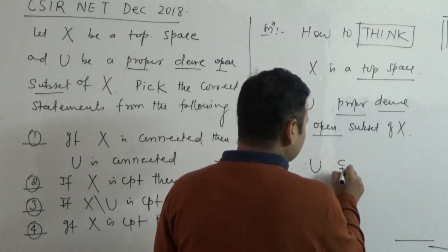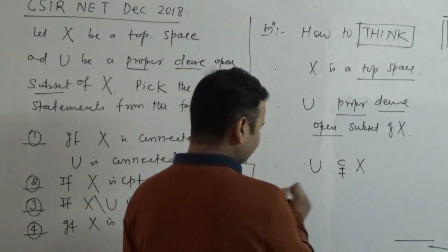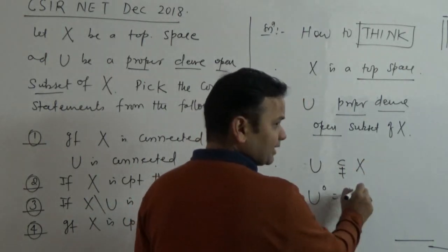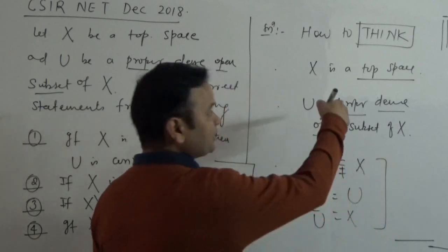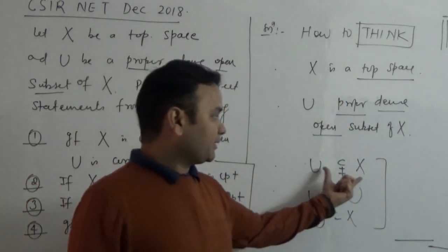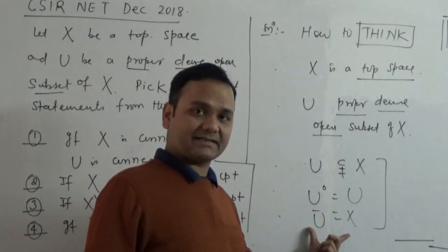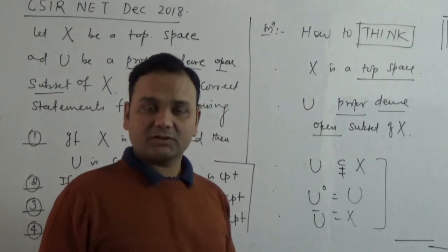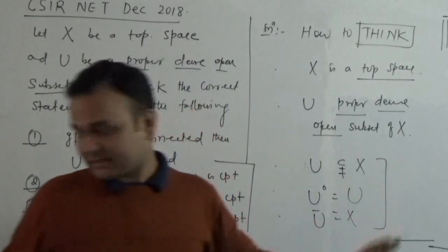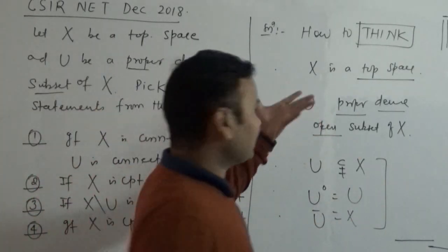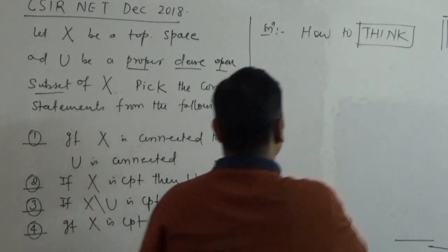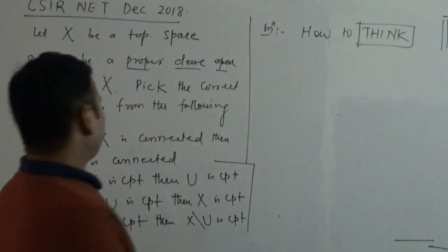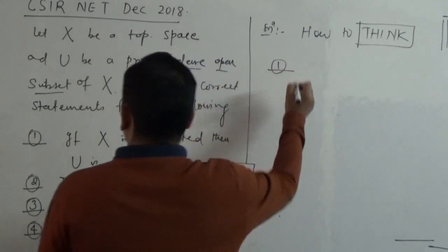So U has three properties: it is proper, it is open, and it is dense. These three properties carry forward. So on this basis we will answer this question. Let's go one by one. Now, the first option.